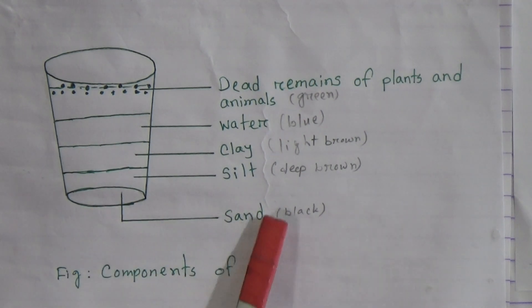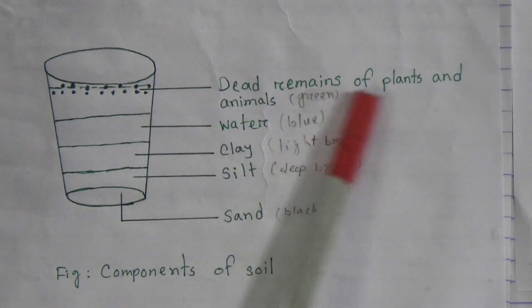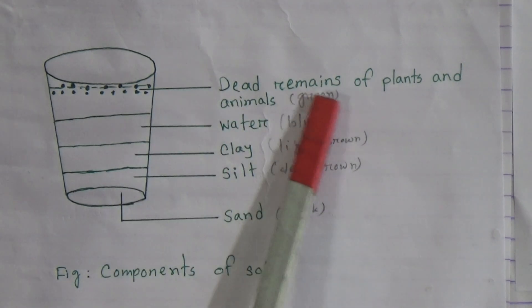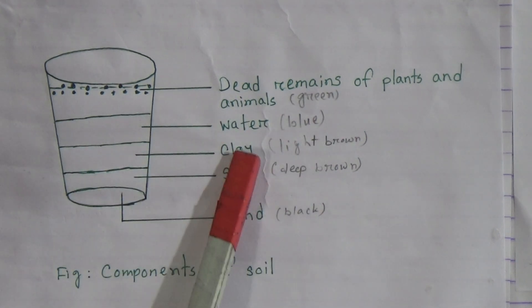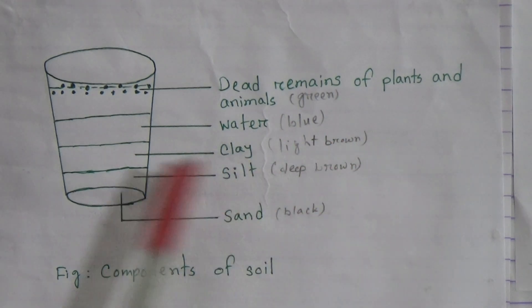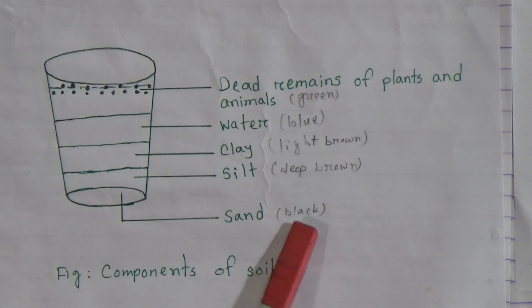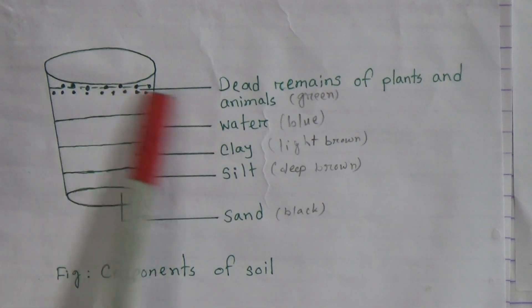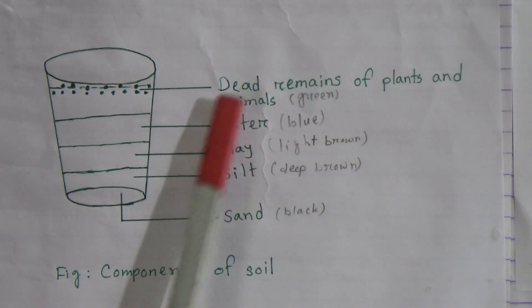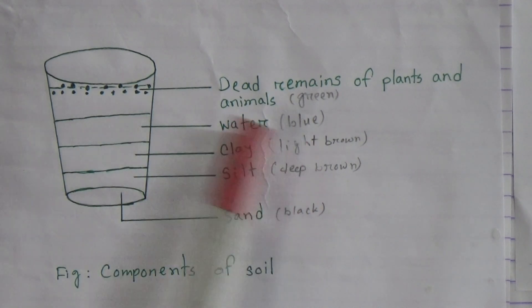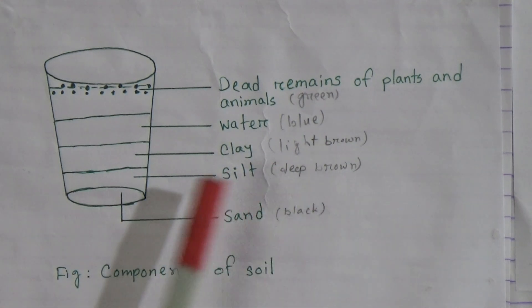Now I am telling you which colors you have to use. Dead remains of plants and animals: use green color. Water: use blue color. Clay: use light brown color. Silt: use deep brown color. Sand: use black color. My dear students, first you have to draw this figure, then color it, then label it. Dead remains of plants and animals — green; water — blue; clay — light brown; silt — deep brown; sand — black.